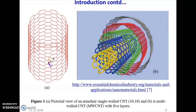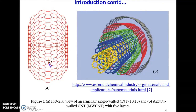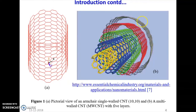Now, what are the types of carbon nanotube? Carbon nanotube is of two types: single-wall carbon nanotube or multi-wall carbon nanotube. Figure A is showing a single-wall carbon nanotube, where there is only one layer. But in figure B, there is a multi-wall carbon nanotube, and if you see figure B, there is a total of 5 layers. So this is a multi-wall carbon nanotube with 5 layers.